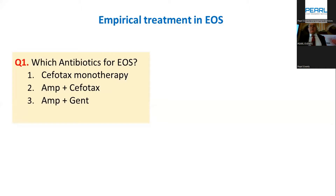Gentamicin also suppresses ESBL. In early onset sepsis we don't have many ESBL, but mothers who had maternal fever, rupture of membranes, and babies with early onset sepsis can sometimes have ESBL. Gentamicin, while not aimed at ESBL, suppresses it while waiting for the result.